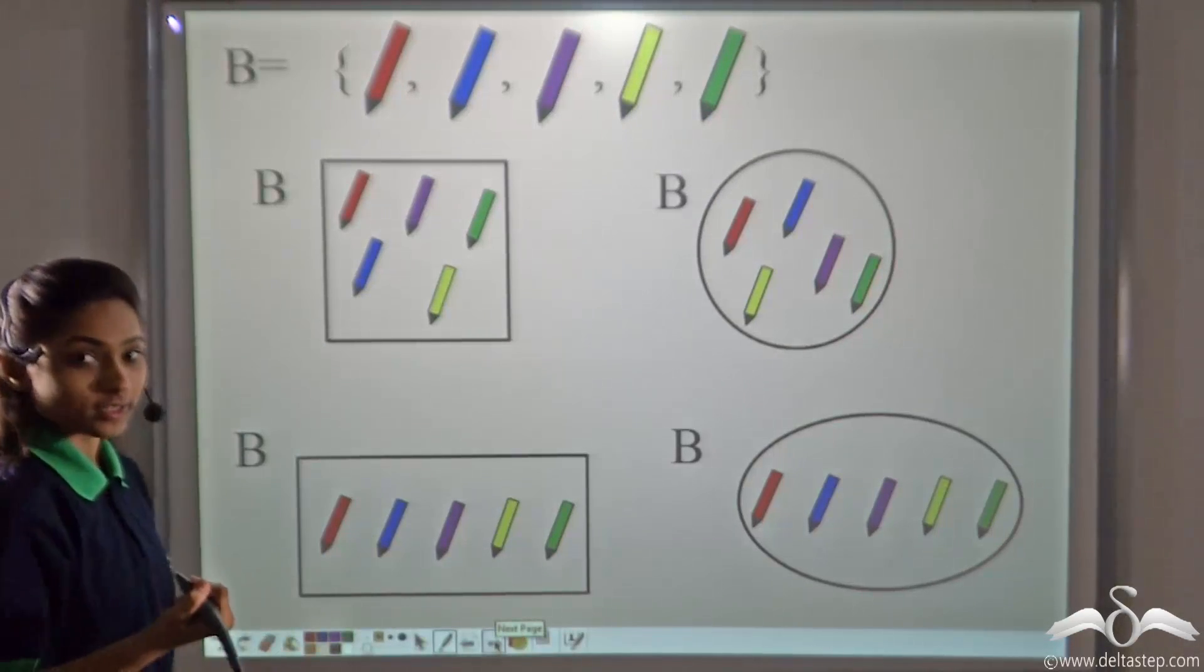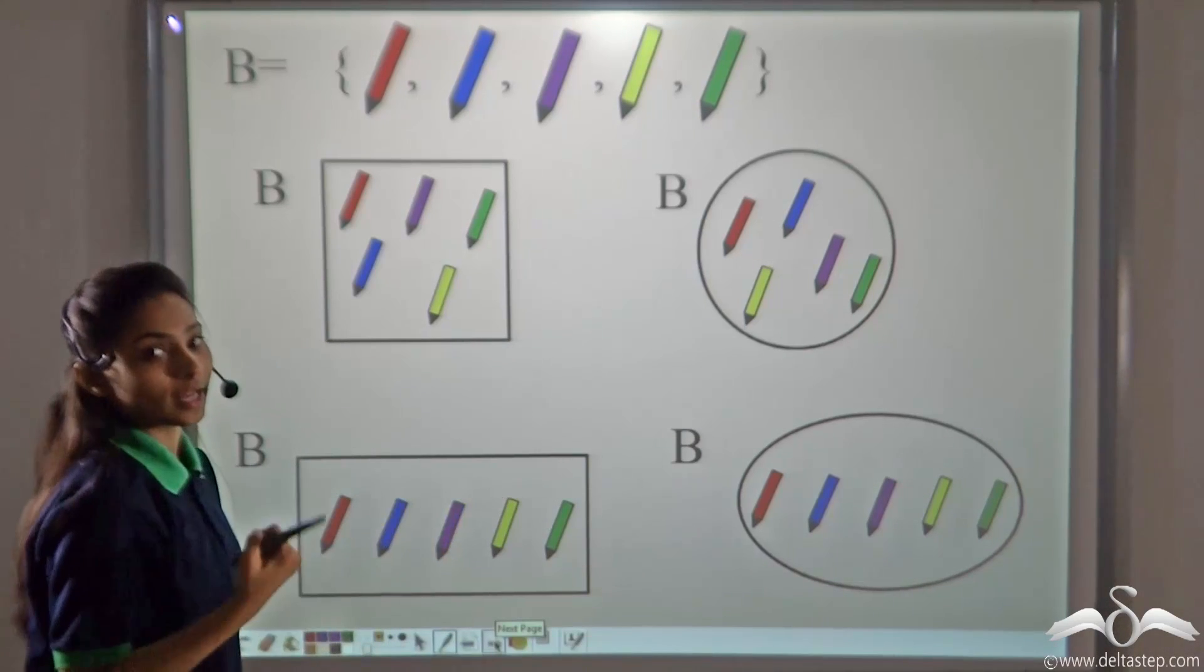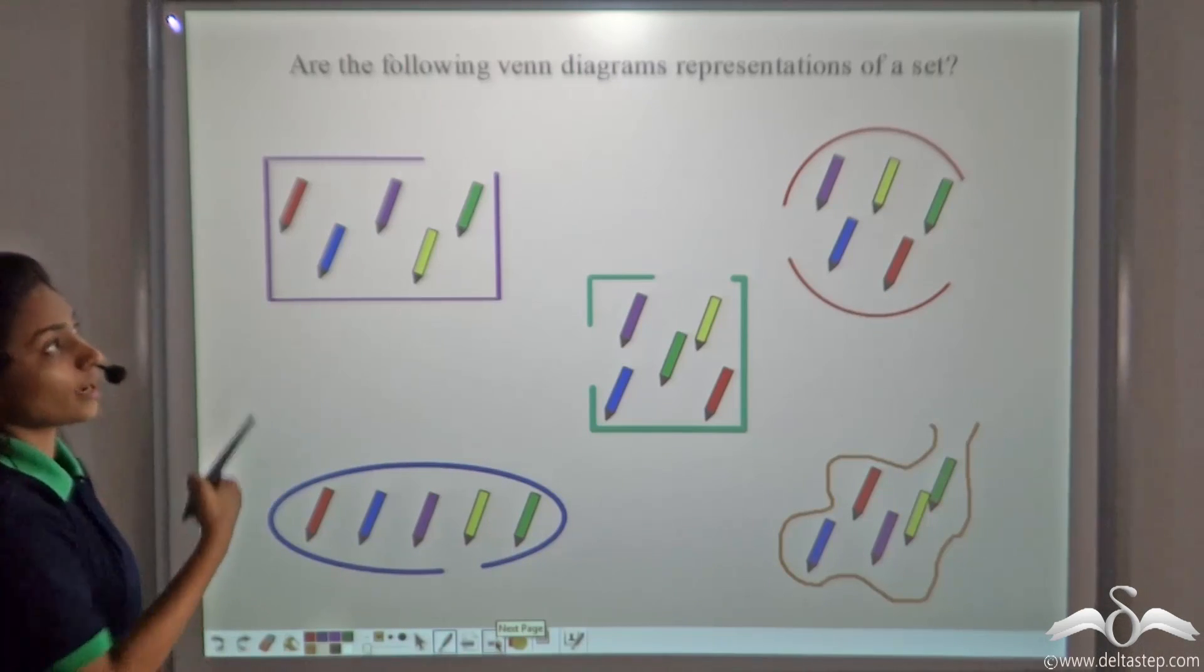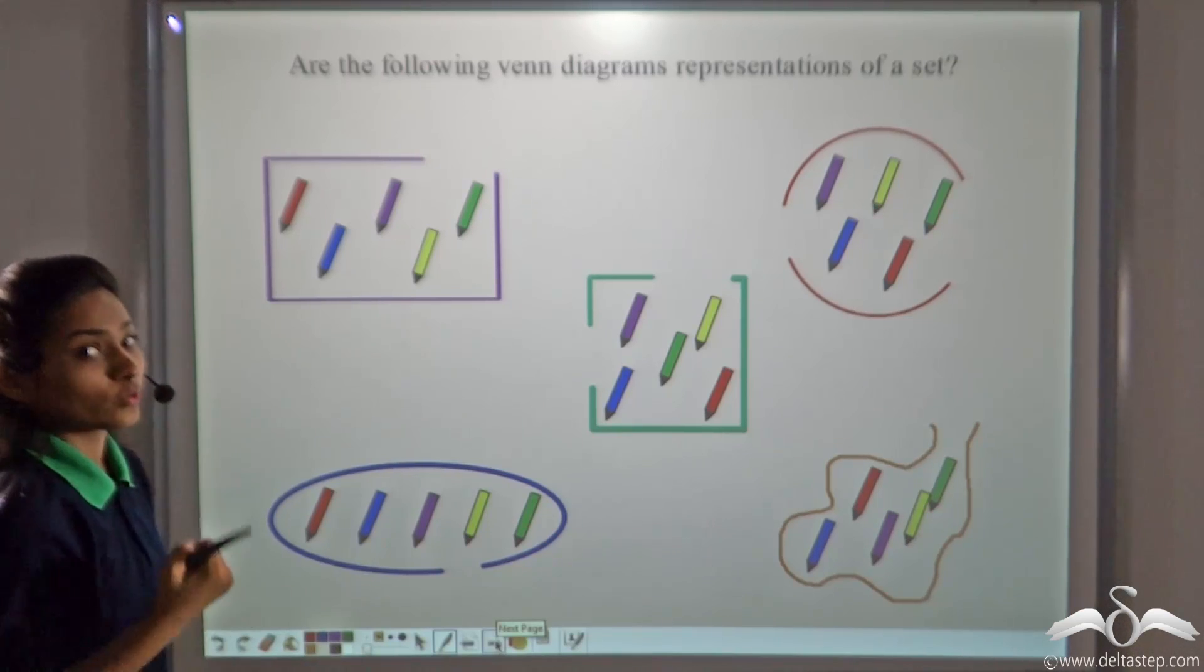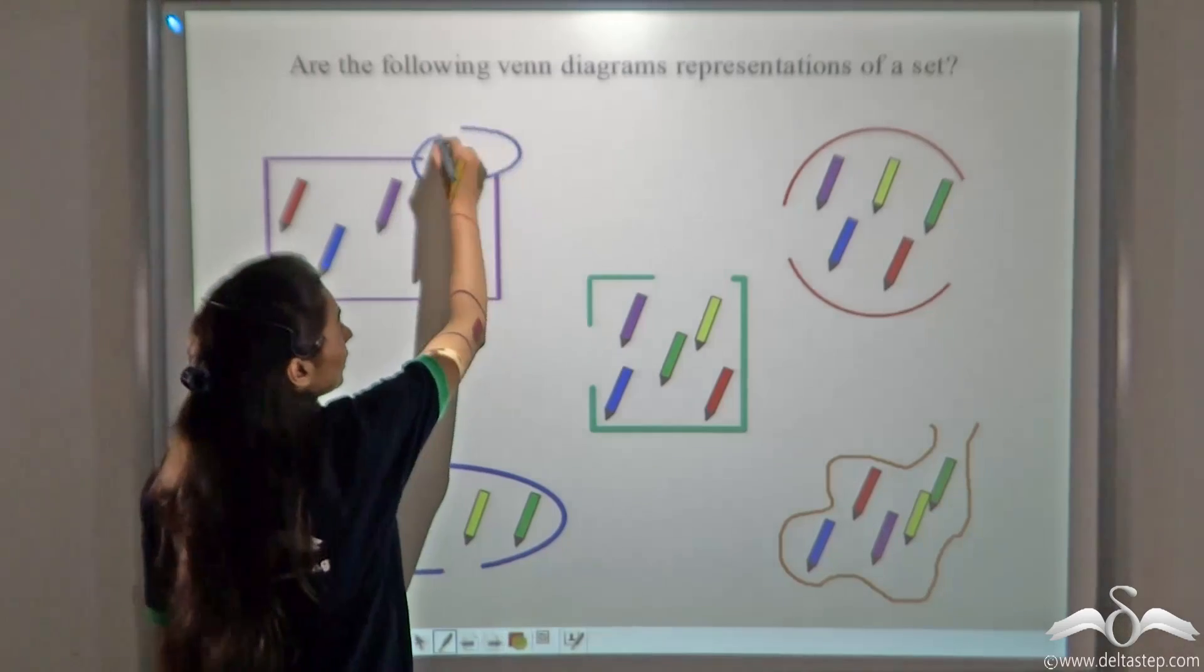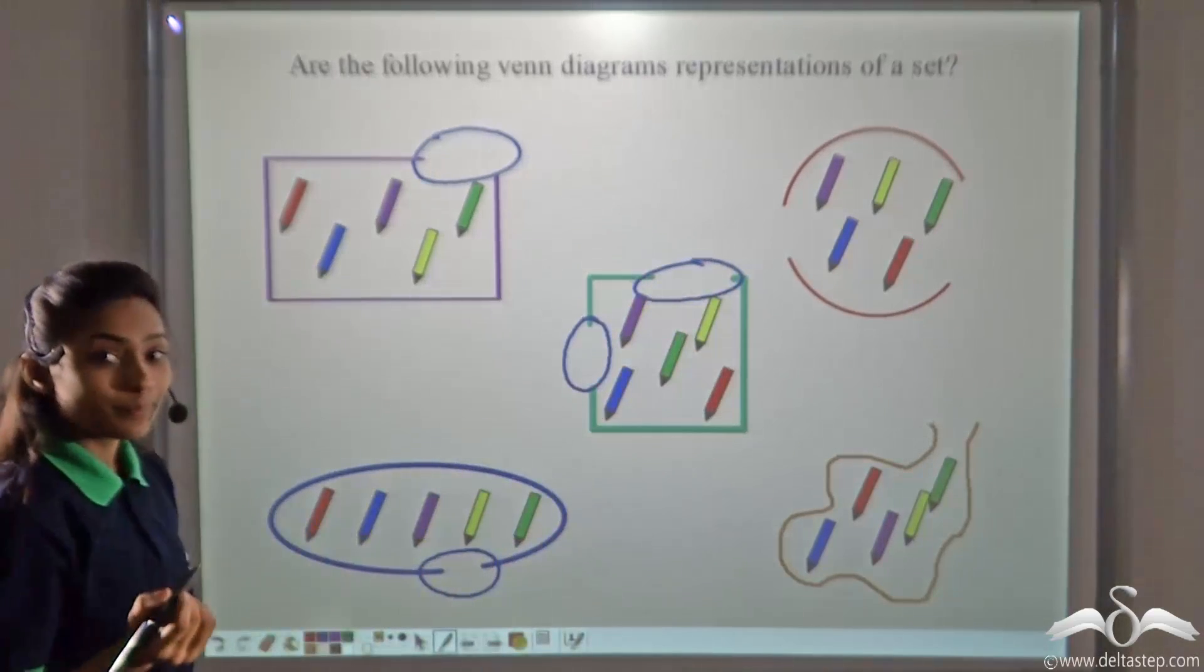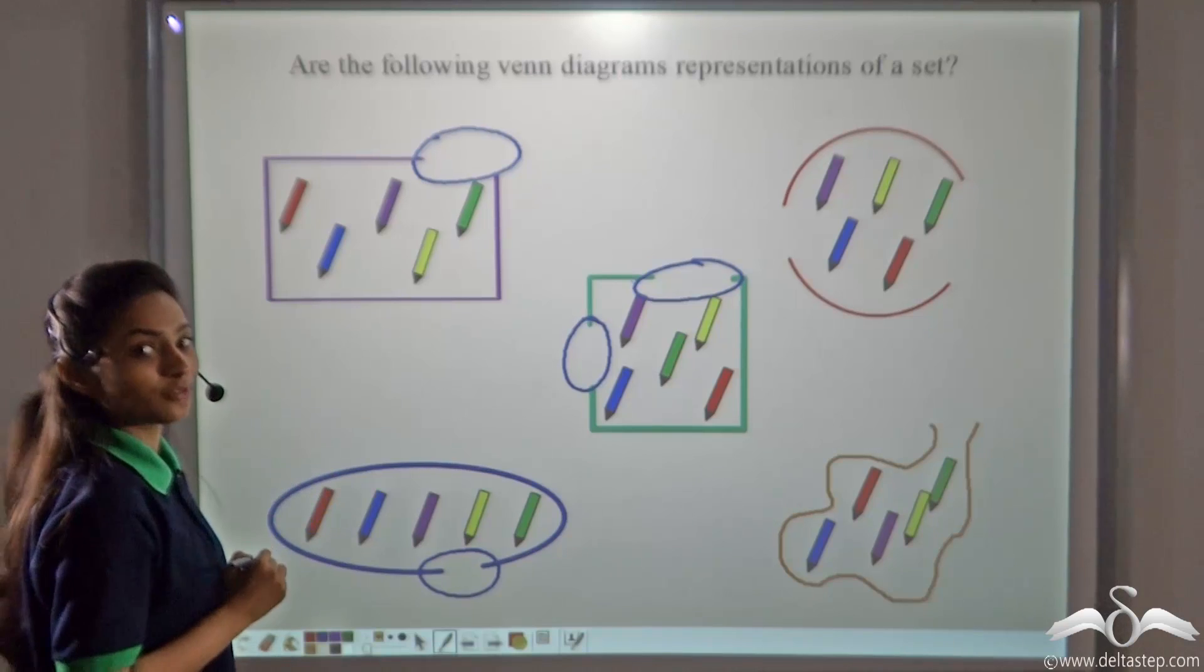Simple closed figures such as square, circle, rectangle, or an oval can be used to represent sets. Are these following diagrams representation of a set? No, these diagrams do not represent sets correctly because they are incomplete. Simple closed figures are only representations of sets, not incomplete figures.